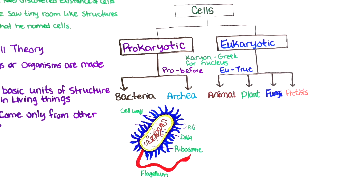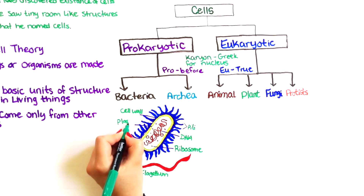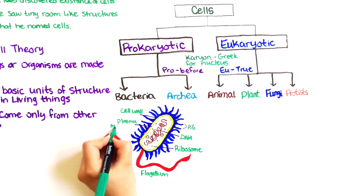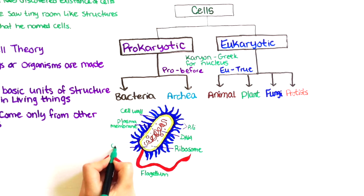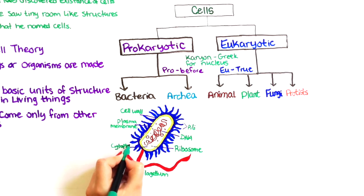Finally, holding everything together is the cell membrane, similar to that which you'd find around a eukaryotic cell. All cells have a double membrane that separates the inside content of the cell from the outside environment. The cytoplasm is basically a word used to describe all the liquidy bits floating around inside the cell.